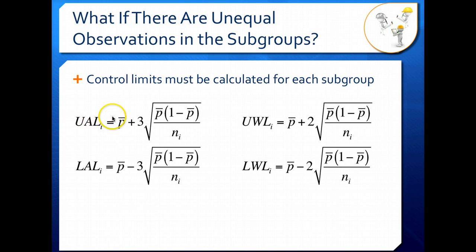And what that little i indicates is every single time you change subgroups, you're going to need to recalculate your action limits and your warning limits, because the number in your subgroup is changing each time. And that affects your formula right here.